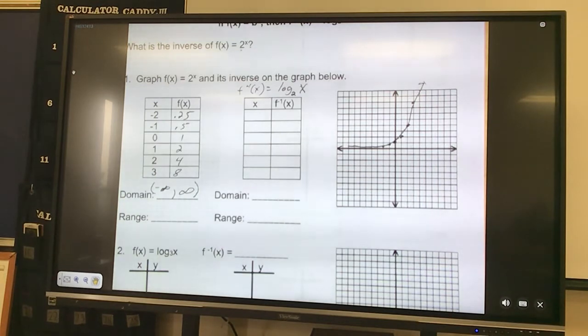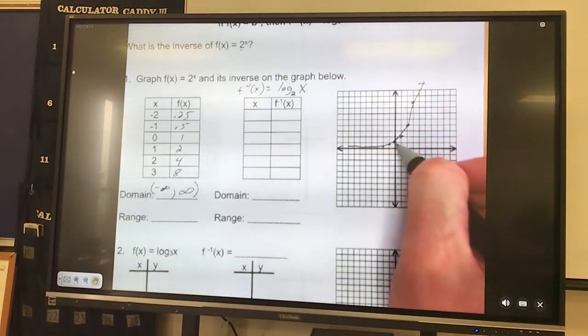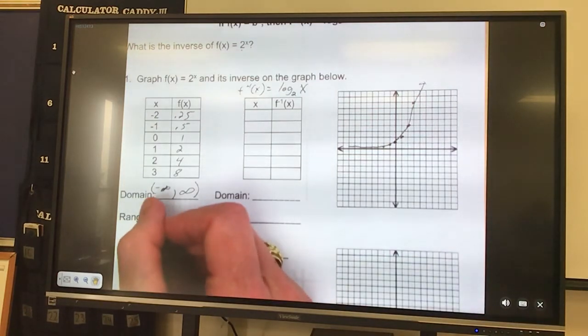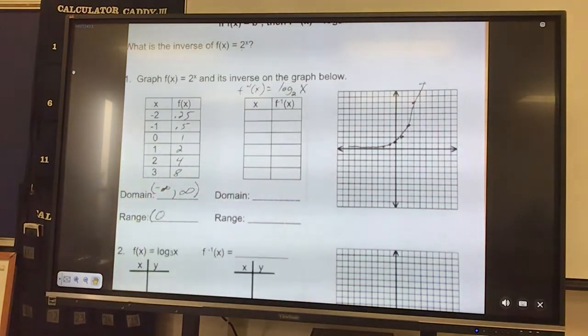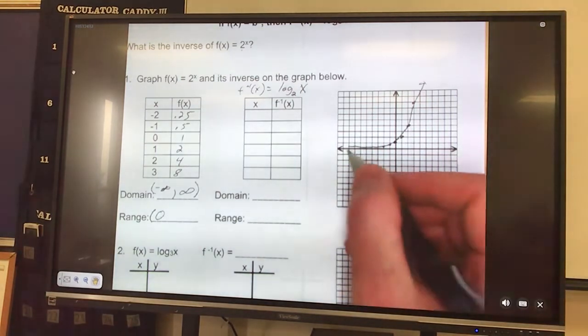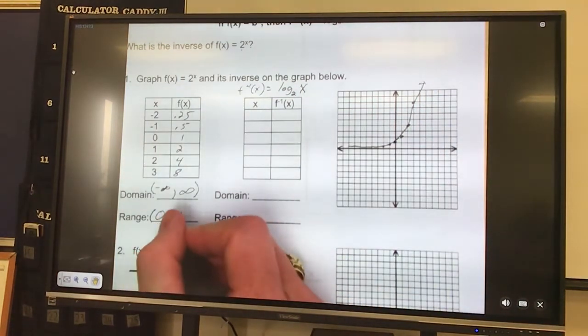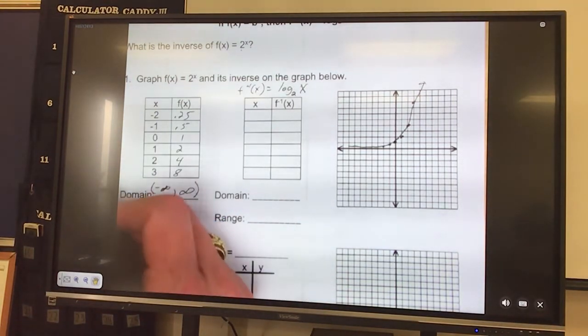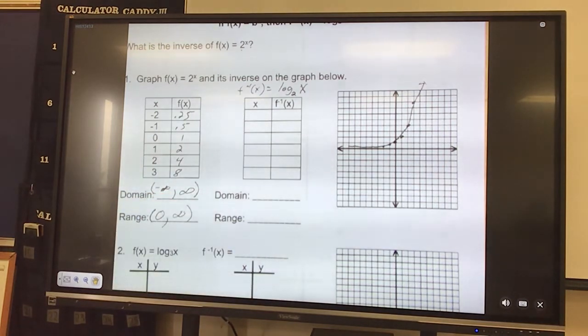For our range, our range, it will go how low? Well it won't actually hit 0. But it gets close, so since it gets close but doesn't hit it, that has to be an open parenthesis because it doesn't actually stop at 0. We'll use brackets when it stops. And it goes up forever, so that's infinity.